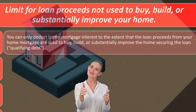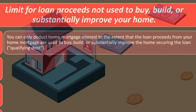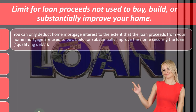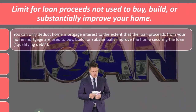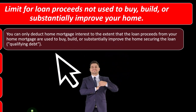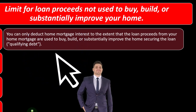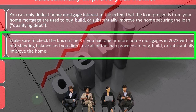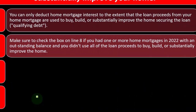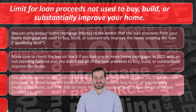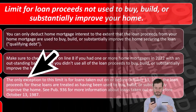Limits on home mortgage interest: your deduction for home mortgage interest is subject to a number of limits. If one or more applies, see Publication 936 to figure your deduction. The first limit is for loan proceeds not used to buy, build, or substantially improve your home — that's generally what you'd expect when you first buy the home or refinance. You can only deduct home mortgage interest to the extent that the loan proceeds are used to buy, build, or substantially improve the home — that's called qualifying debt. The only exception is for loans taken out on or before October 13, 1987.